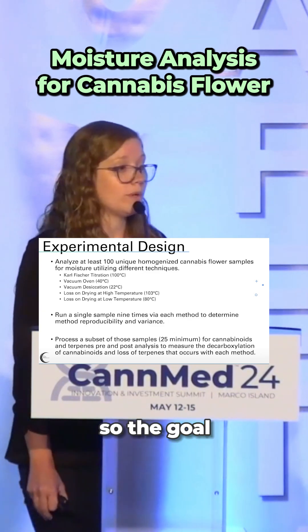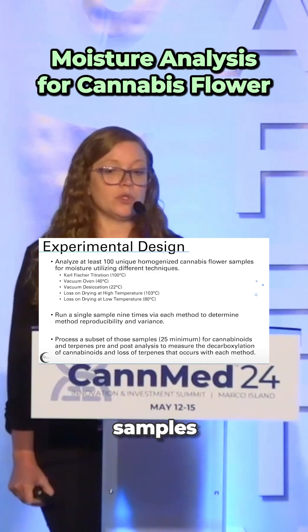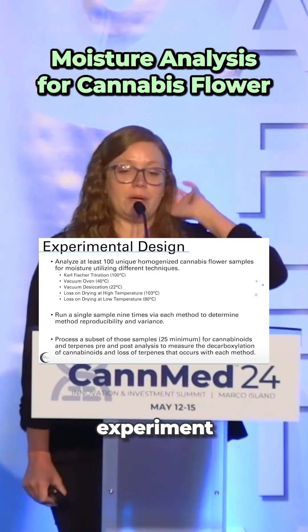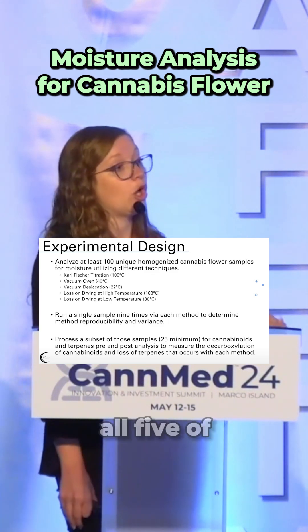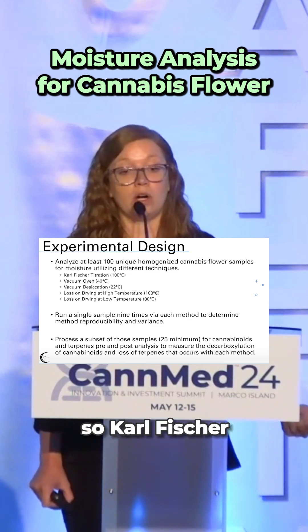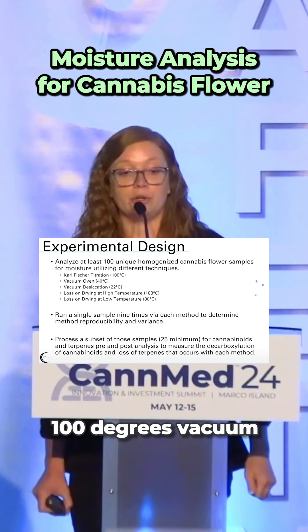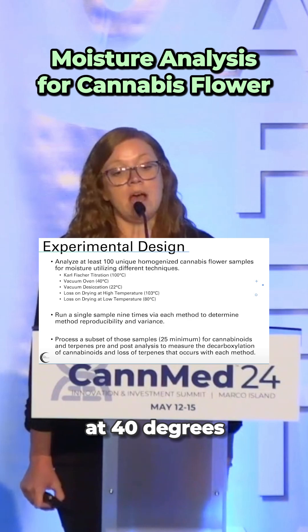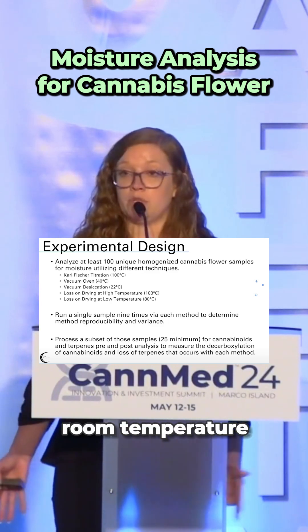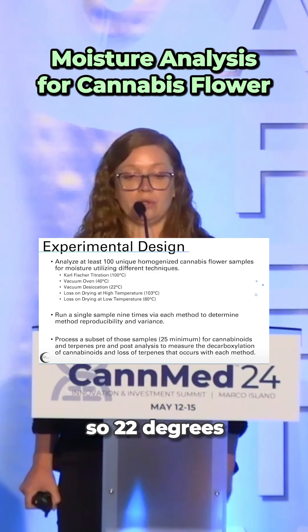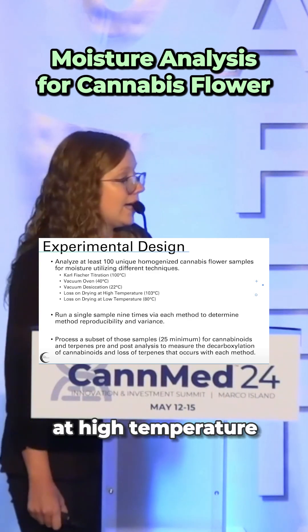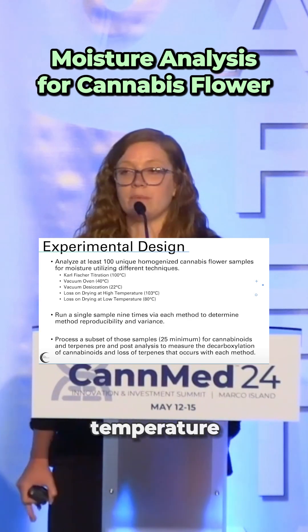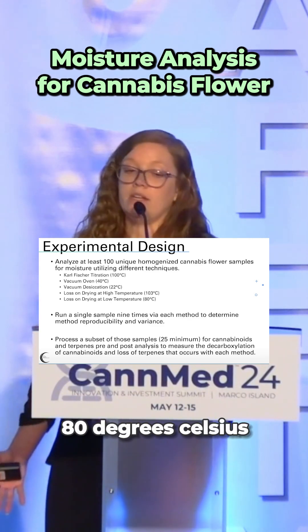The goal was to analyze at least 100 samples. We ended up with 120 samples total for this experiment, and we analyzed them via all five moisture techniques: Karl Fischer, the oven at 100 degrees Celsius; vacuum oven at 40 degrees; vacuum desiccation at room temperature, so 22 degrees Celsius; loss on drying at high temperature at 103 degrees Celsius; and loss on drying at low temperature at 80 degrees Celsius.